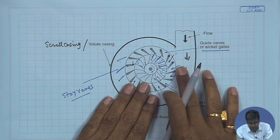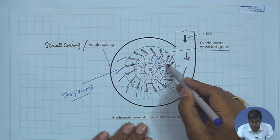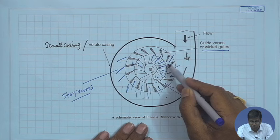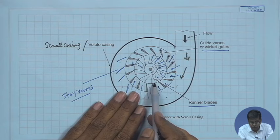In summary: flow first comes to the scroll casing or volute casing, then flows to the guide vanes and stay vanes. The purpose of these vanes is to direct the fluid to the runner, reducing the static pressure by providing a converging cross-sectional area of flow, and properly directing the fluid to the runner blade passages. The fluid flows through the runner blade passages and comes out of the draft tube to the tail race level.